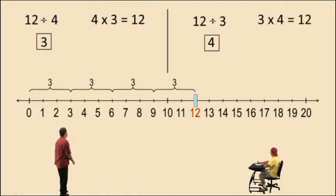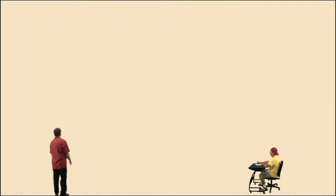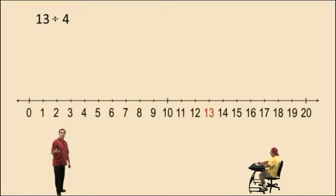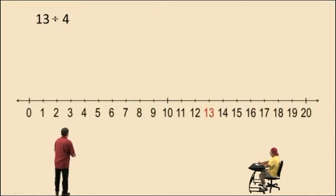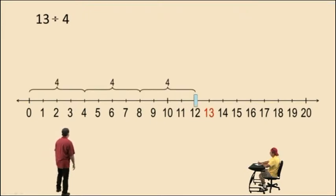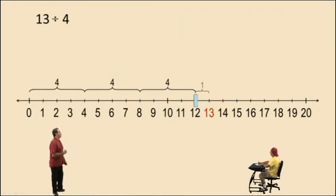That's how you check your answer. 13 divided by 4 — here we're going to have some remaining units. How many 4's go into 13? Well, there's one 4, there's 2 4's, there's 3 4's. But notice, 3 whole 4's make up 12.